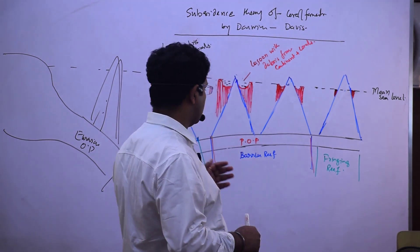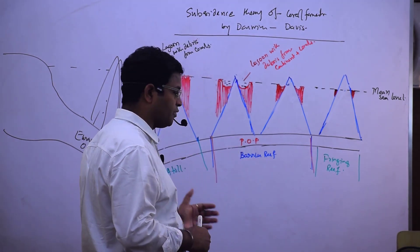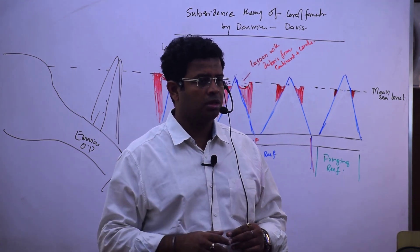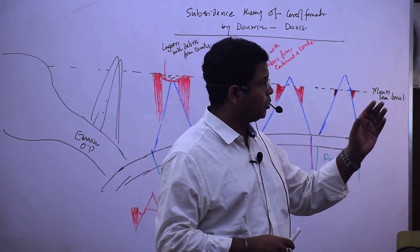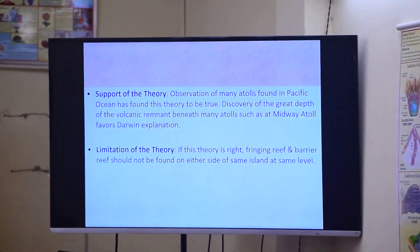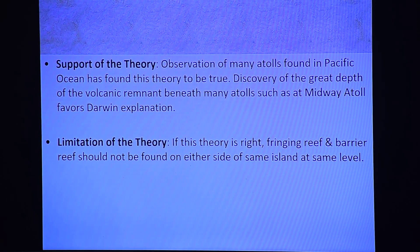Even then we can say that this theory can be criticized on the basis that one side it is fringing reef, on the other side there is a barrier reef. And this way there is an assumption limitation of the theory. And you can write down this support of the theory and limitation of this theory.